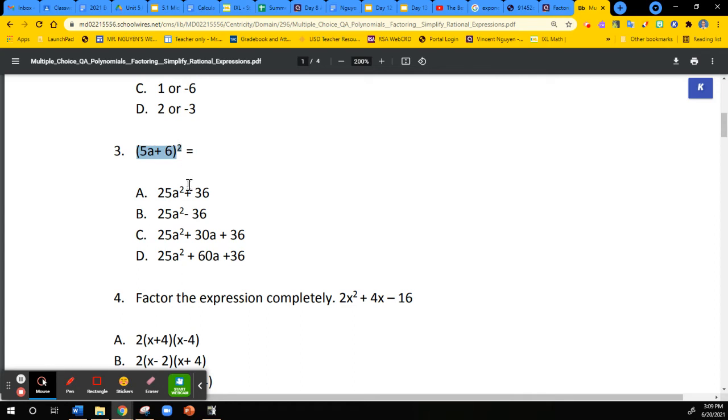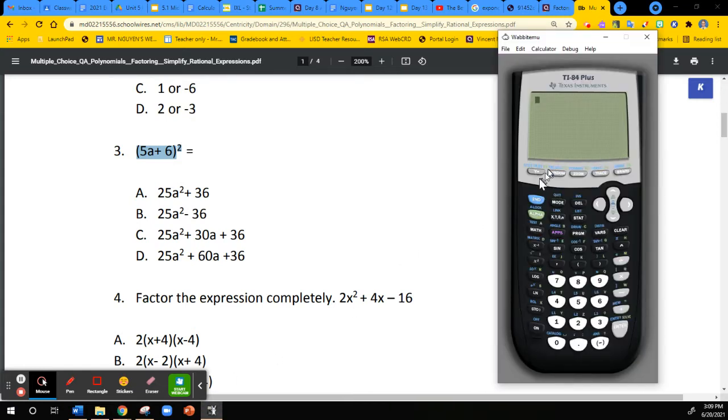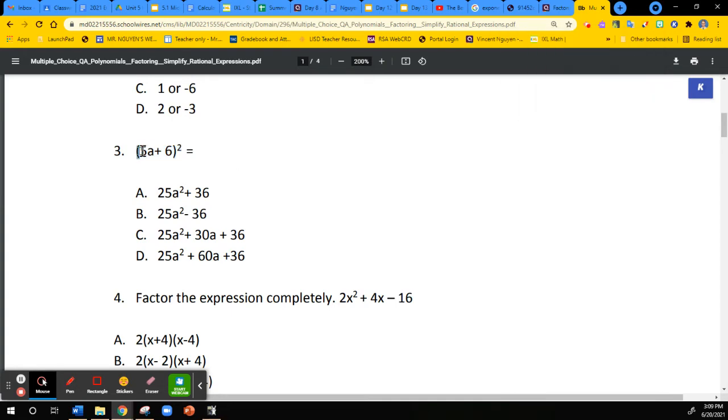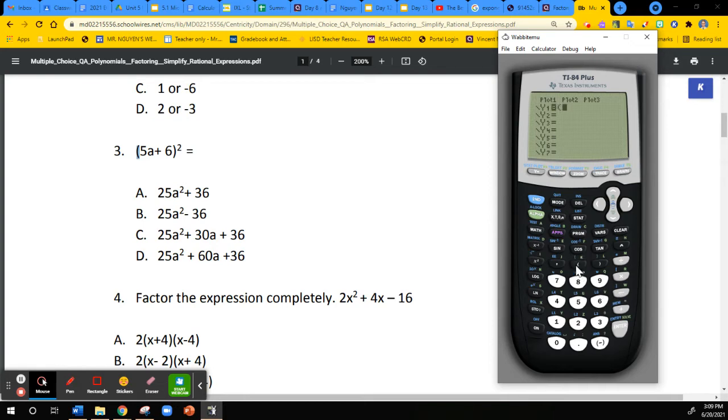You can just type this original expression and we are going to check the answer and see which one matches the original expression. We are going to first go to y equals and in y1 we are going to type in the given problem. I am going to type in parenthesis 5, and if they give you any kind of variable at all, that is going to be x because your calculator will only take x. So change all the variables to x. It's 5x plus 6 and then squared.